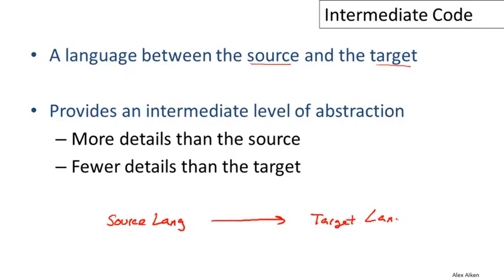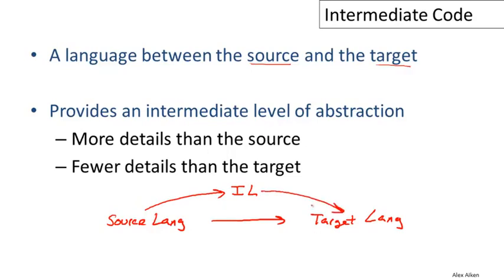In this class, for example, our source language is Cool and our target language is MIPS assembly code. An intermediate language actually lives in between these two. A compiler that uses an intermediate language will first translate its source language into the intermediate language, and then later translate the code in the intermediate language into the target language.